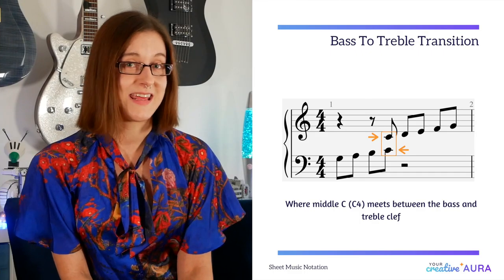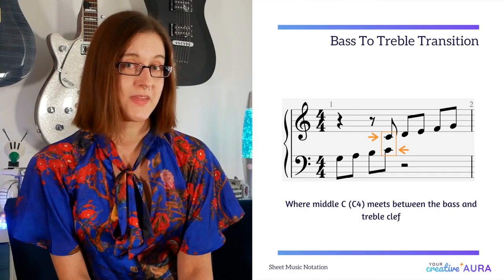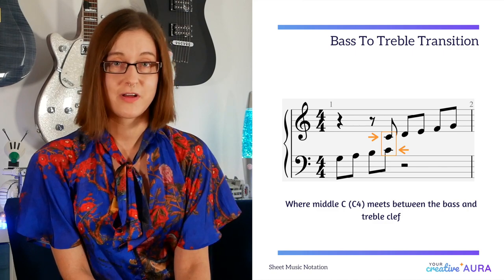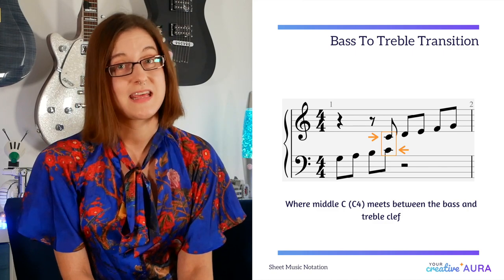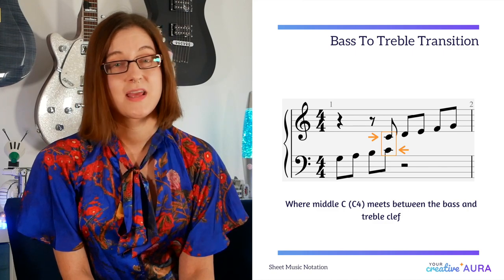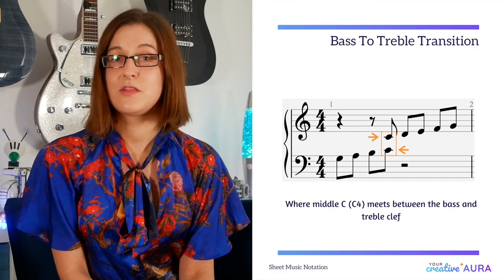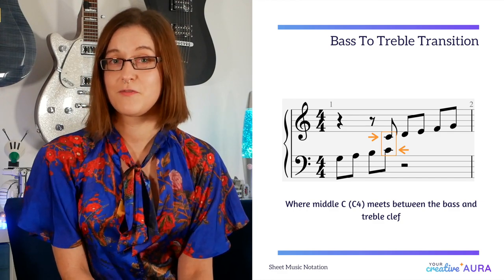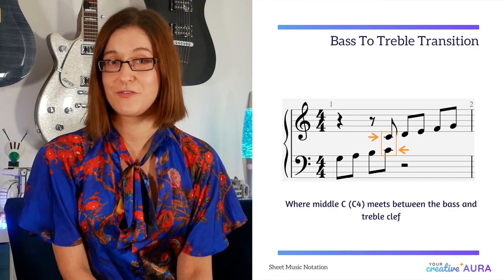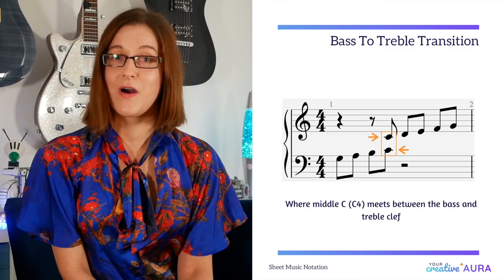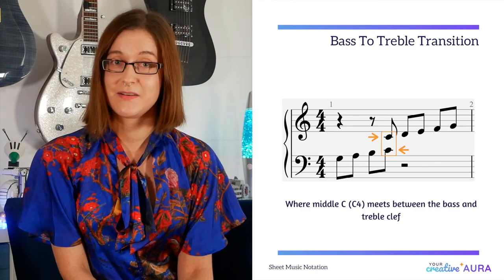So where do bass and treble clef meet when the grand staff and ledger lines are used? Our top line for the bass clef is an A3, and our bottom line for the treble clef is an E4. Therefore we have three notes — B3, C4, and D4 — and C4 has a ledger line.